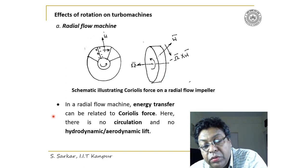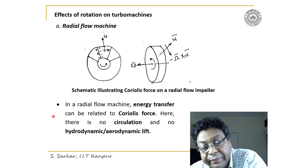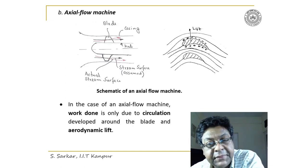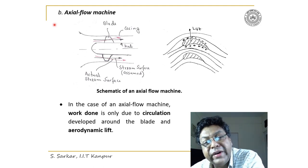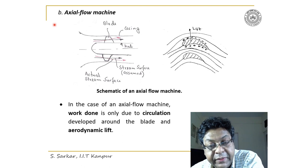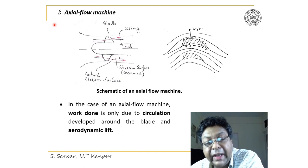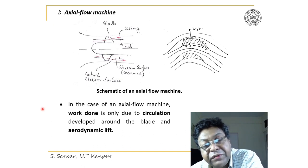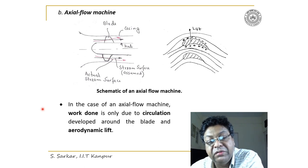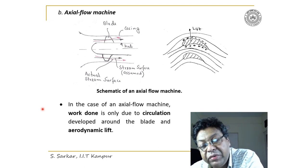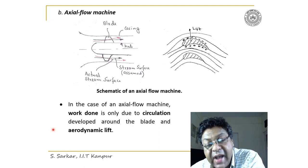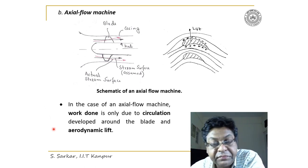In a radial flow machine there is no circulation and no hydrodynamic lift. On the contrary, for an axial flow machine, energy transfer occurs because of circulation developed around the blade and due to aerodynamic lift.